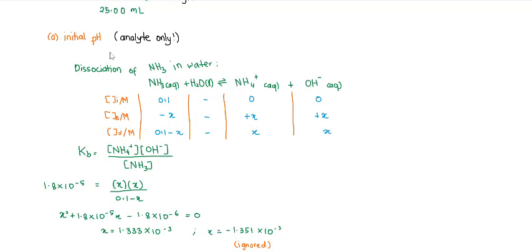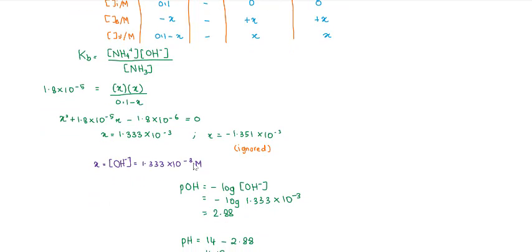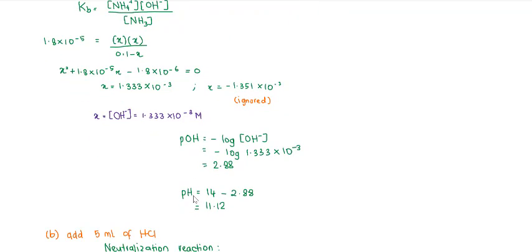To calculate the initial pH, remember we haven't added any titrant yet into the conical flask. Our analyte is ammonia. The dissociation of ammonia in water produces NH4+ and OH- ions. Since ammonia is a weak base, the dissociation is only partial. We need to find the concentration of OH-, which is the value of X. Using the Kb expression and substituting information from the reaction table, X equals 1.333 × 10^-3 M. This is our OH- concentration. Calculate the pOH, then pH = 14 - pOH.